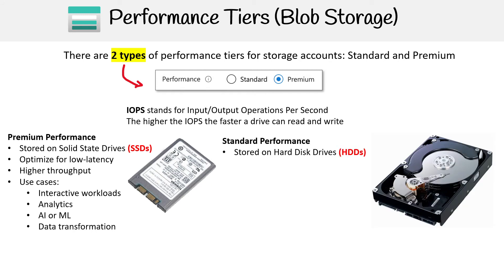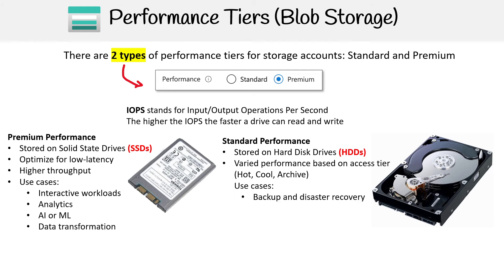For standard performance, these are running on hard disk drives, and you're going to have performance based on your access tier. We'll talk about access tiers shortly, but the tiers would be hot, cool, and archive. This is great for backup and disaster recovery, media content, and bulk data processing.